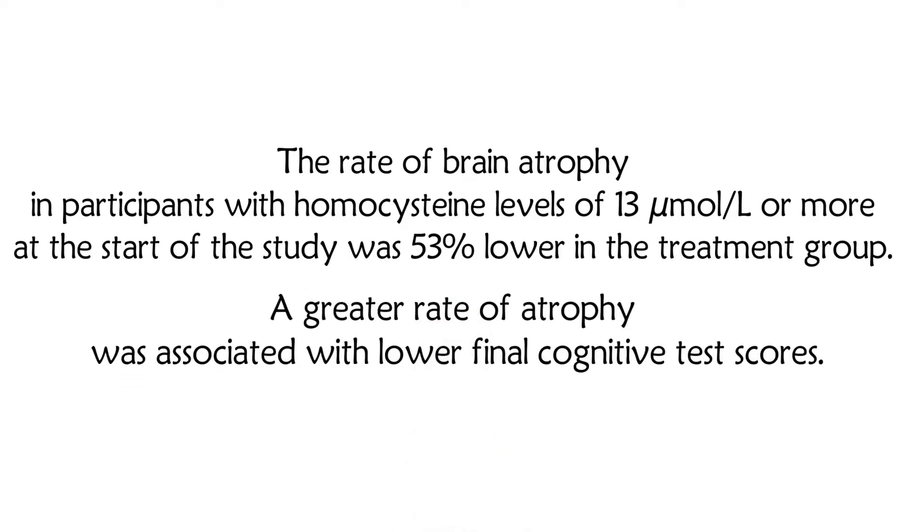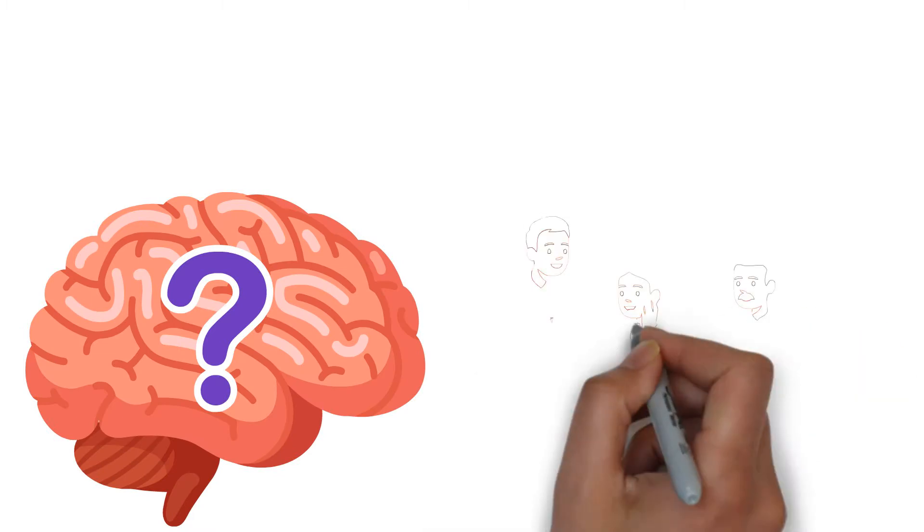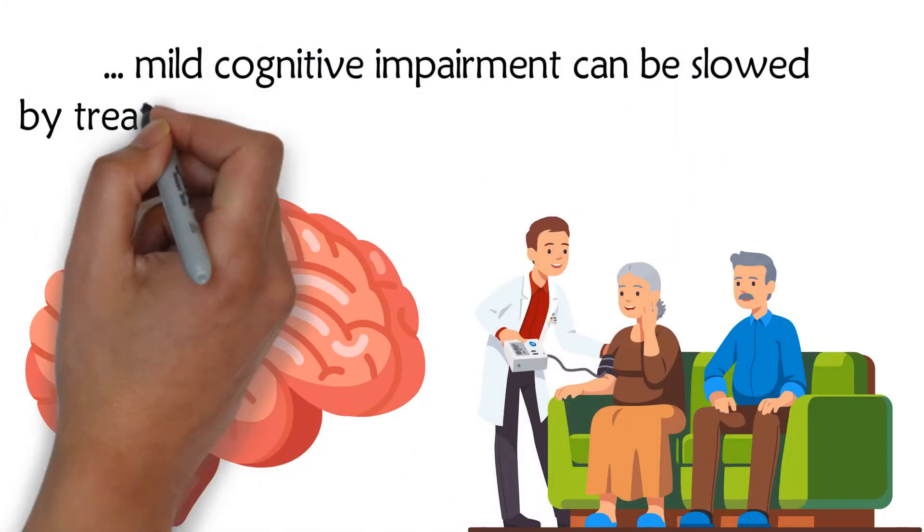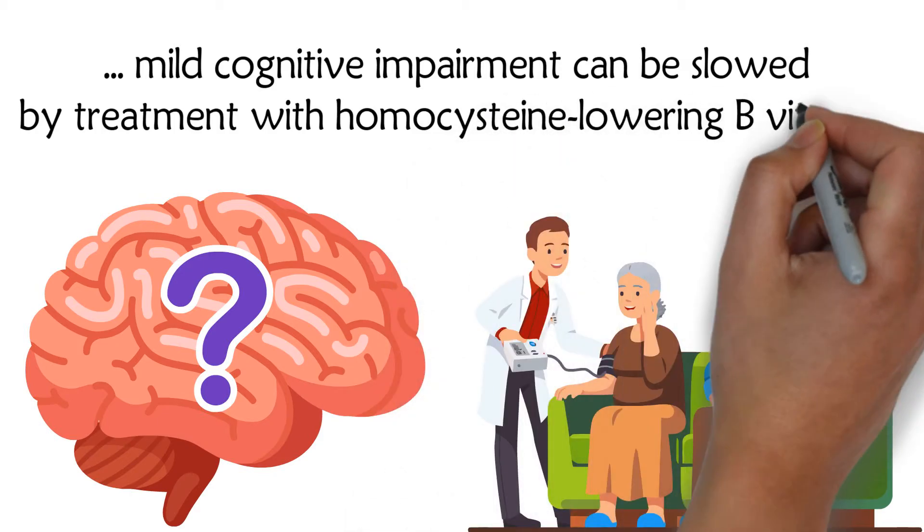A greater rate of atrophy was associated with lower final cognitive test scores. The researchers added that the accelerated rate of brain atrophy in elderly with mild cognitive impairment can be slowed by treatment with homocysteine-lowering B vitamins.